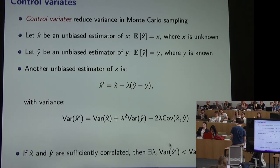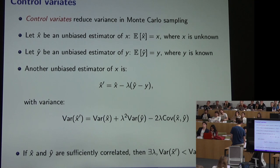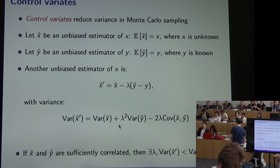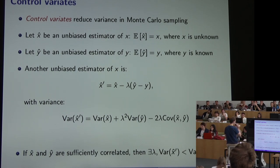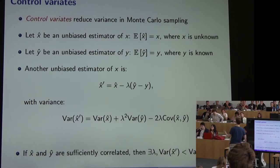If x and y are sufficiently correlated, the magnitude of the covariance term will be large, and for a suitable choice of lambda the new estimator will have lower variance than the original. So the idea of control variates is: if you can identify another quantity that is correlated with your quantity of interest and whose expected value is known, you can use it to reduce variance while retaining the unbiasedness property.